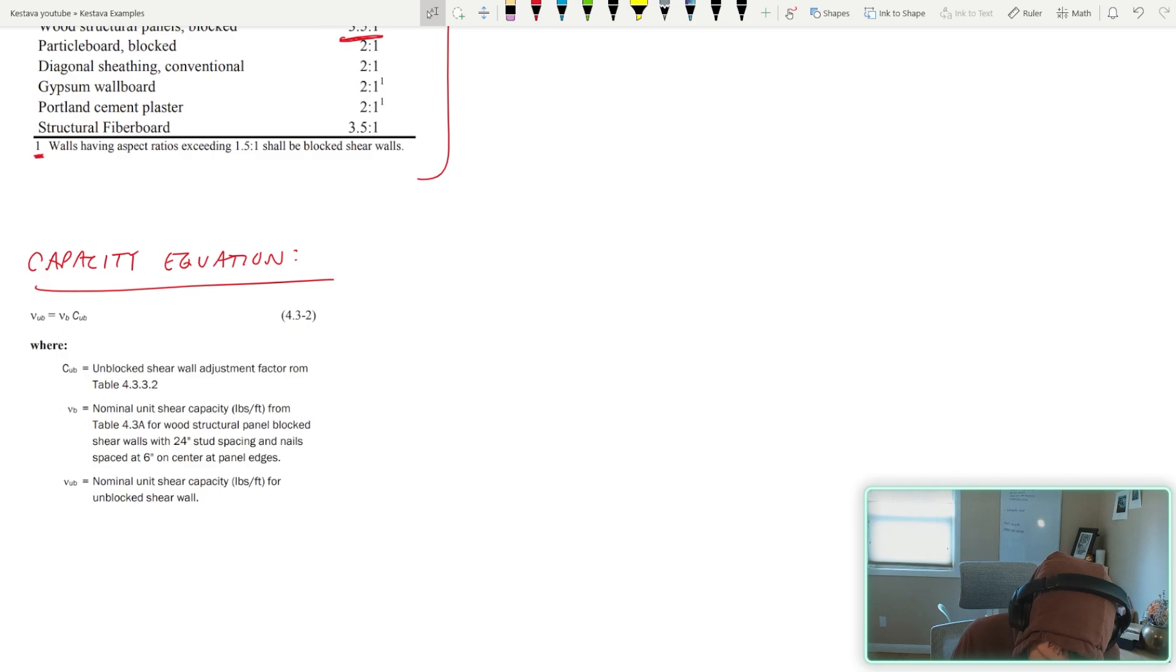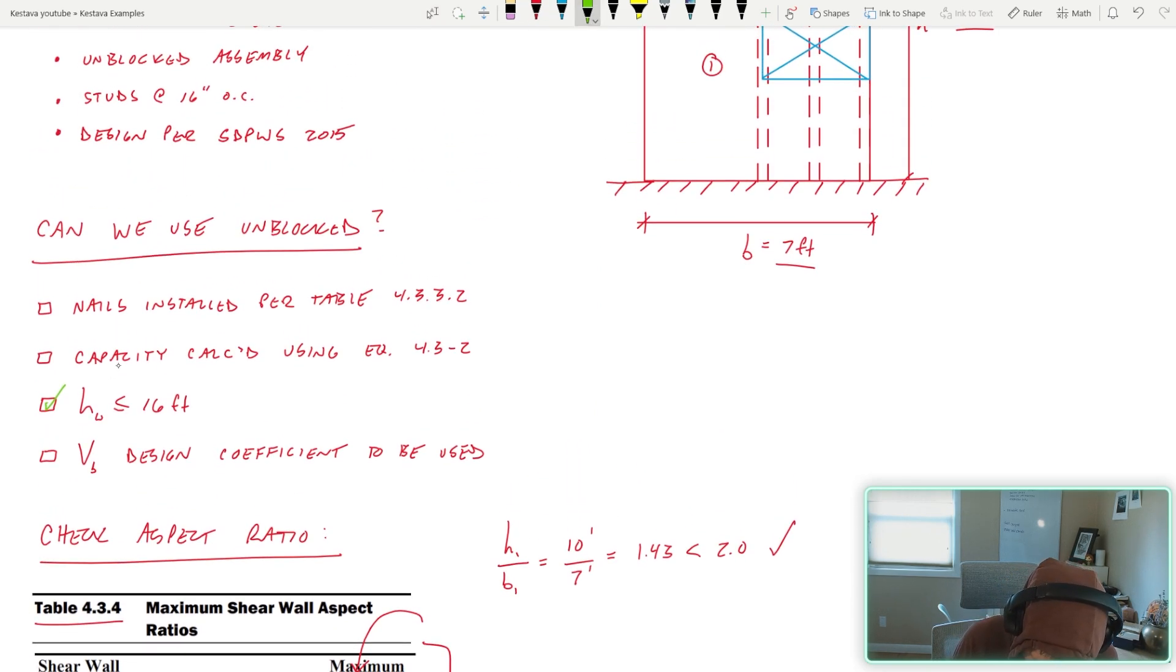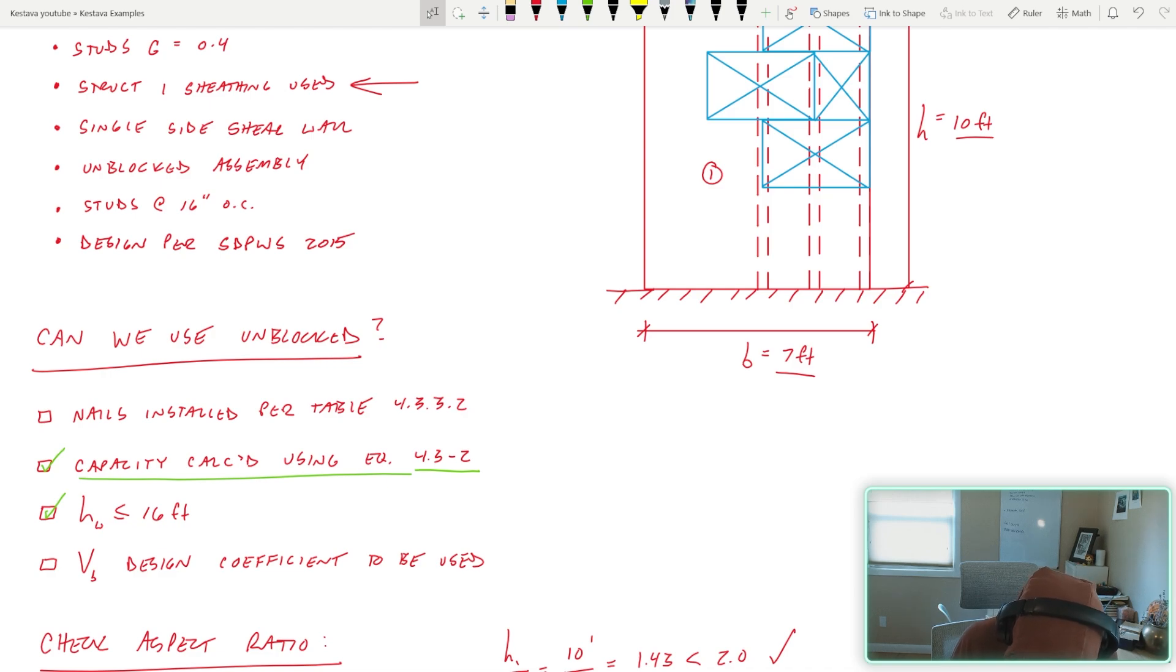Next, let's talk about our capacity equation. This is 4.3-2, a snip straight from the SPID WHIZ. It's V sub UB equals V sub B times C sub UB. They keep it nice and clean, nothing too complex. V sub UB is your nominal shear capacity in PLF for unblocked. C sub UB is going to be an adjustment factor based on table 4.3.3.2. In our checks, we need to use capacity per equation 4.3-2, and we need to use an adjustment factor based on the nailing per table 4.3.3.2 to satisfy the equation. We can check that off.